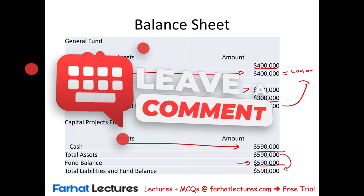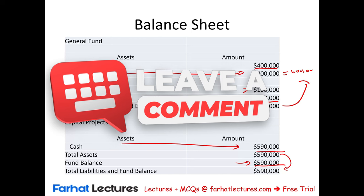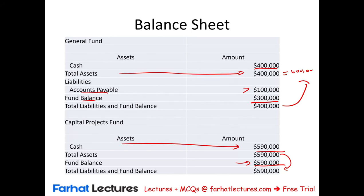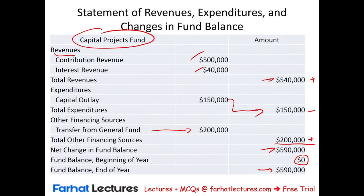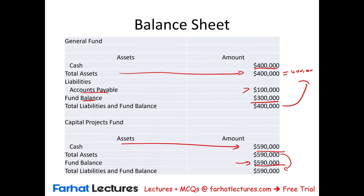So we looked at the journal entries and the financial statements. Governmental fund balance and capital projects fund balance are both important. We showed not only the journal entries, but also the statement of revenues, expenditures, and changes in fund balance, as well as the statement of financial position — the balance sheet. What should you do now? Go to Farhat Lectures for additional resources, multiple choice lectures, and additional exercises — whether you are taking a governmental accounting course, studying for the CPA, or another professional certification. Invest in yourself. Good luck, study hard, and stay safe.